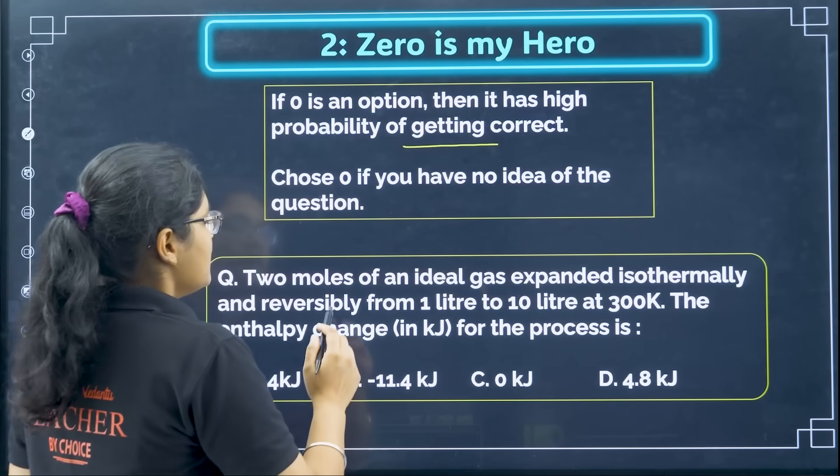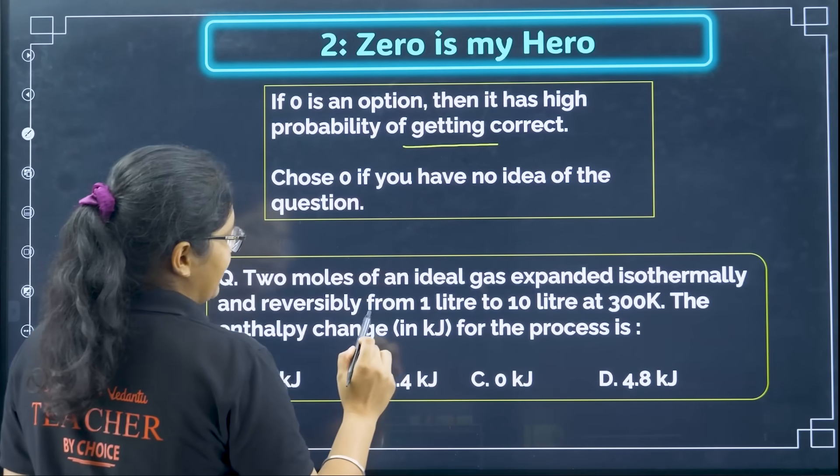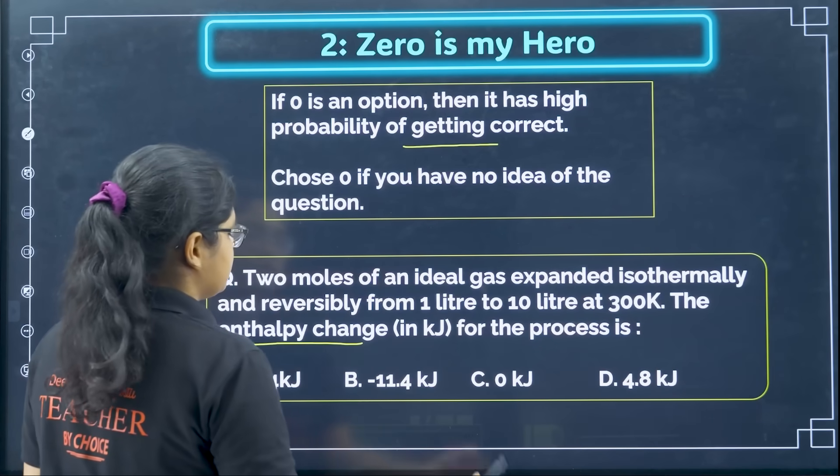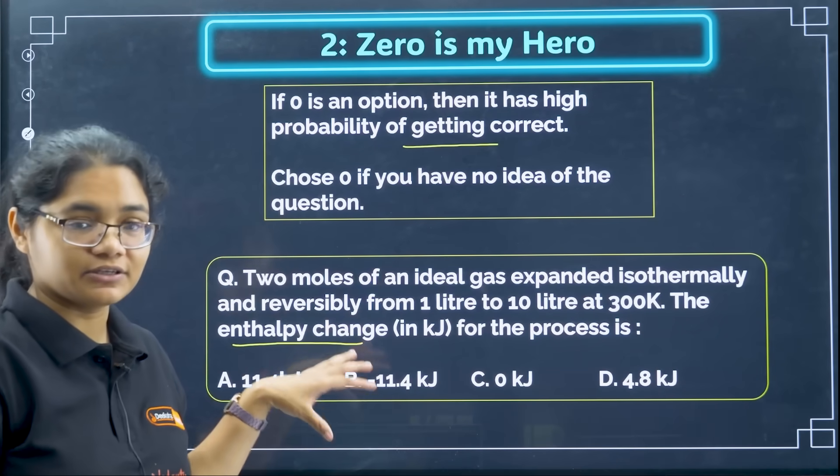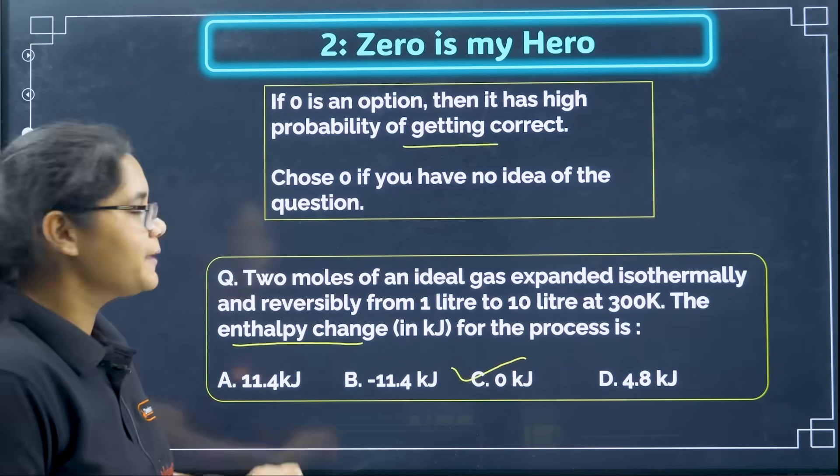For example 2 moles of an ideal gas expanded isothermally and reversibly from 1 liter to 10 liter, the enthalpy change. So I know that the enthalpy change is a function of temperature so that is why here the answer will be 0 kilojoule.